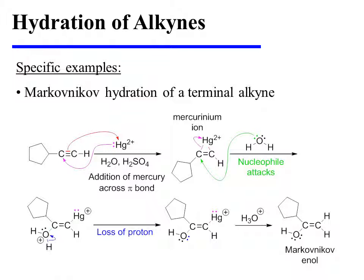Let's consider a specific example of the Markovnikov hydration of a terminal alkyne. Mercuric sulfate is a source of the mercuric ion, which engages the weakly nucleophilic terminal alkyne in reaction. It draws in an alkyne pi bond, and the mercury attacks the interior carbon of the alkyne, which would otherwise have lost a bond. This results in a mercurinium ion.